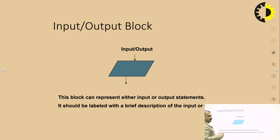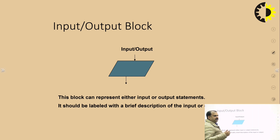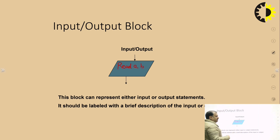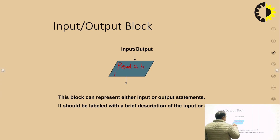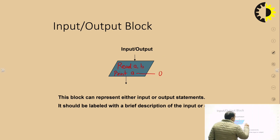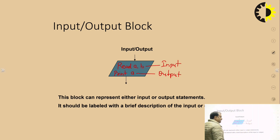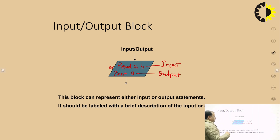The parallelogram represents input and output and should be labeled with a brief description of what is being input or output. For example, we can write 'Read a, b' for an input operation, or 'Print a' for an output operation. At any one time, a parallelogram represents either an input or an output operation — not both.